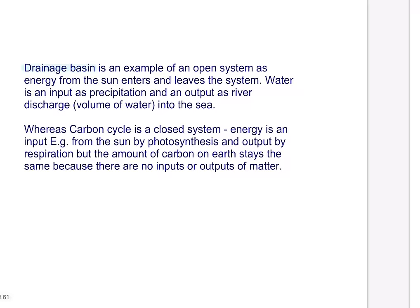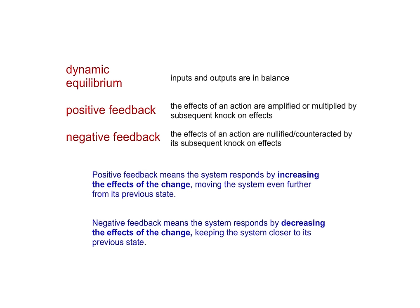There are three more key terms useful to recap. Dynamic equilibrium is when inputs and outputs in the system are in balance — i.e., the same. Positive feedback is when the effects of an action are amplified or multiplied by knock-on effects. Negative feedback is the opposite. Feel free to pause if you need to note the definitions at the bottom of the screen.